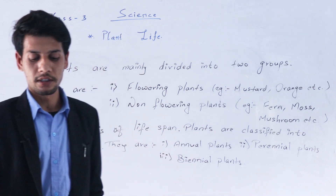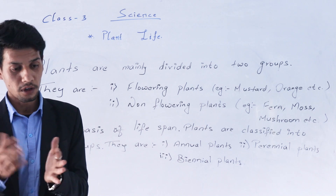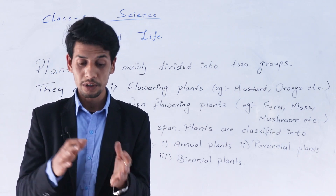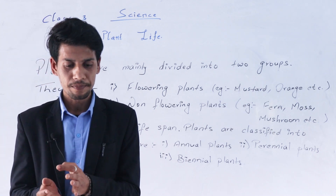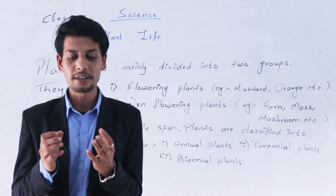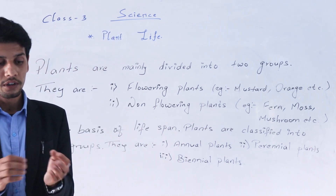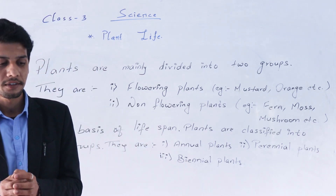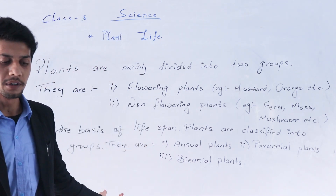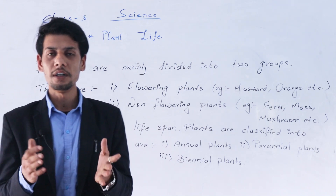We can see different types of plants around us. Some of them have been growing for a long time, and some grow for a short time and then die. On the basis of the duration of living, plants can be grouped into three categories. Plants like mustard, maize, cucumber, cauliflower, rice, etc. — they are annual plants.